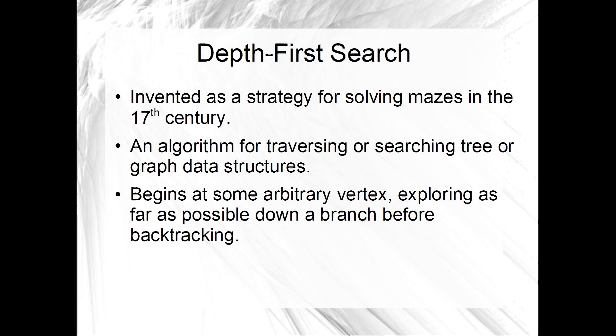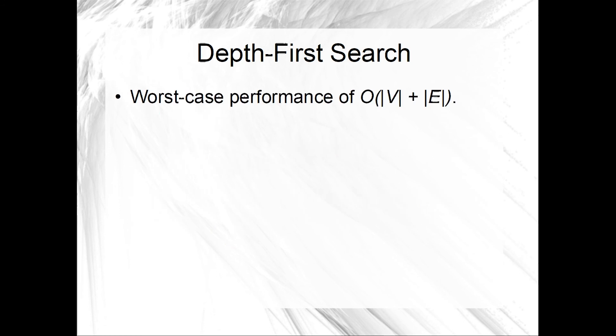The algorithm begins with some arbitrary vertex and will explore as far as it can down a particular branch before backtracking. The efficiency of this algorithm is big O of V plus E — or to be more specific, the sum of the number of vertices and the number of edges. It is a linear algorithm.